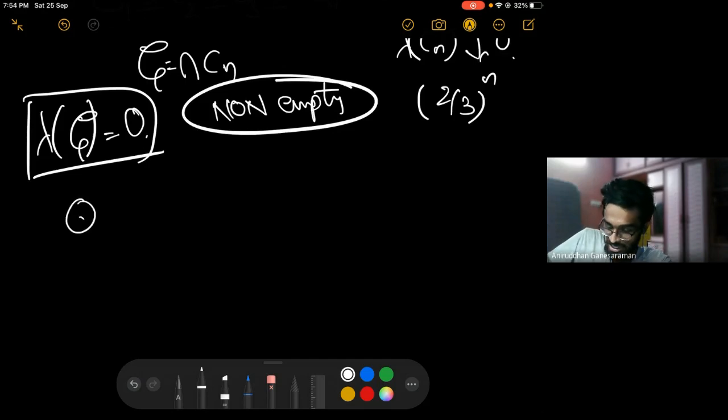Now for a more generalized approach, take the set of all rational numbers. You know that the rational numbers are countable, so you can enumerate them as r1, r2, r3, and so on.